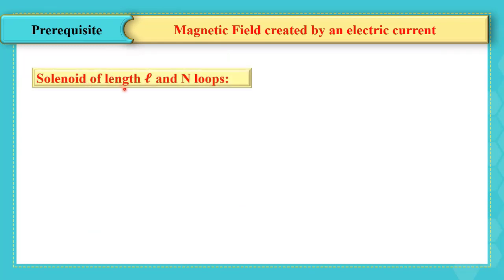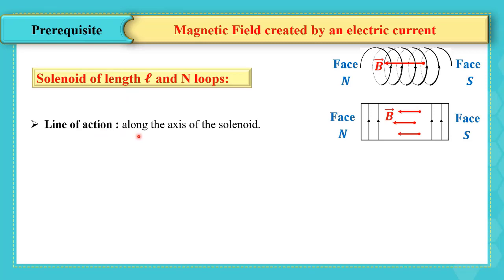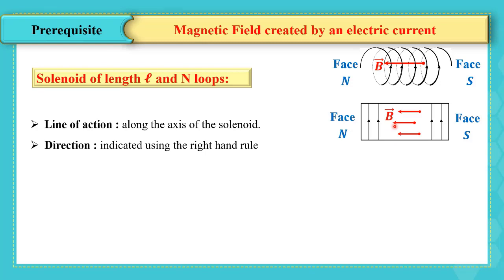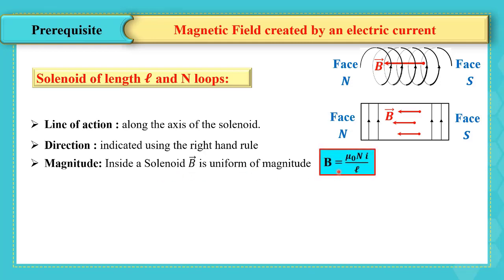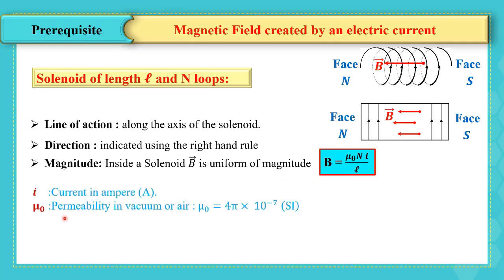In the case of a solenoid of length L and N loops, the magnetic field created inside the solenoid has its line of action along the axis of the solenoid. Its direction is indicated using the right-hand rule: the thumb indicates the direction of the magnetic field while the curved fingers take the direction of the current. The magnitude inside the solenoid is uniform and equal to B = μ₀NI / L, where I is the current in amperes and L is the length of the solenoid in meters.